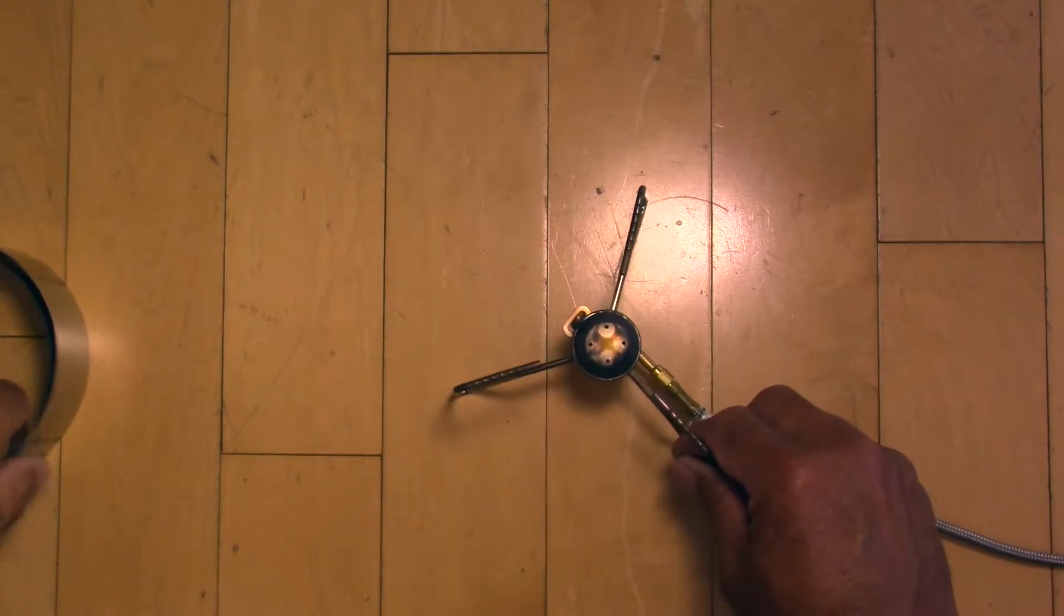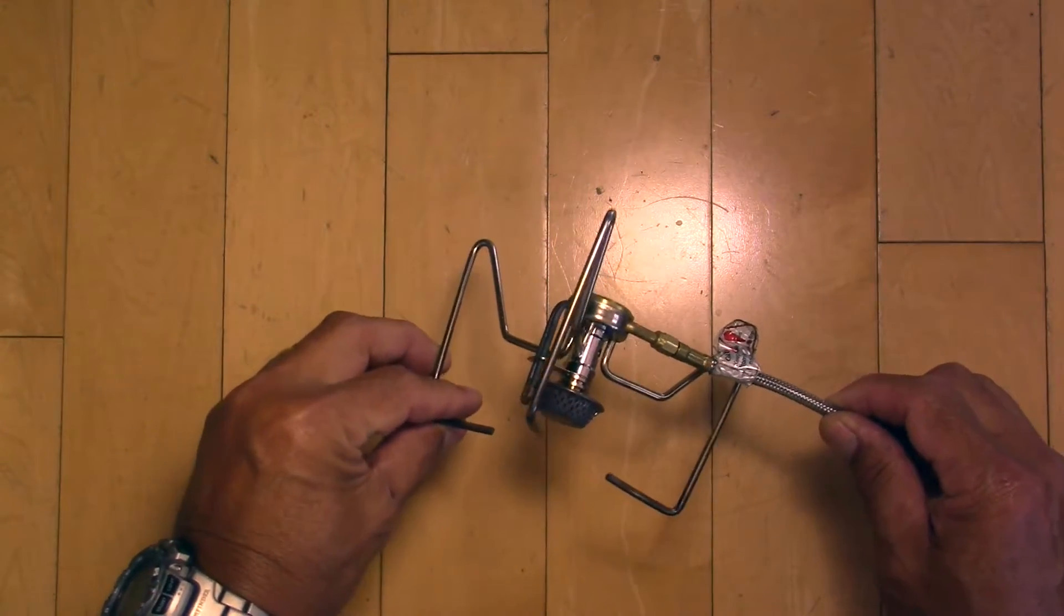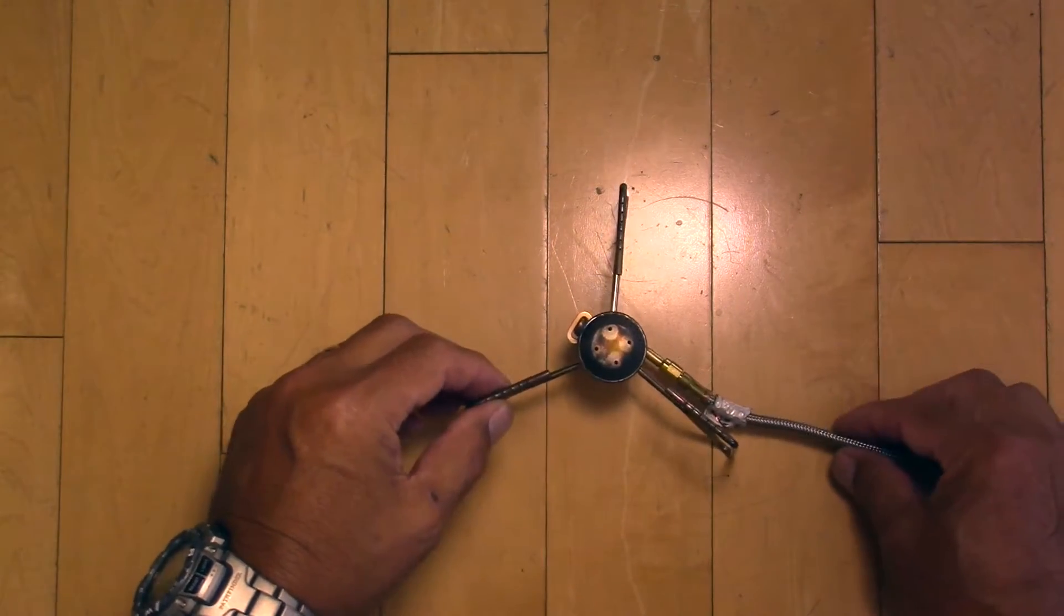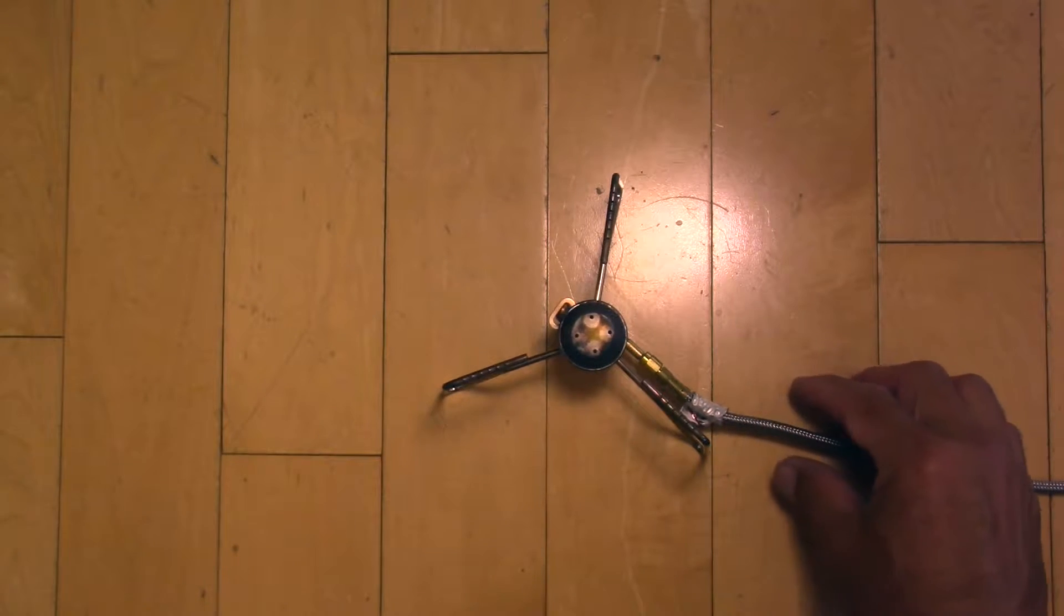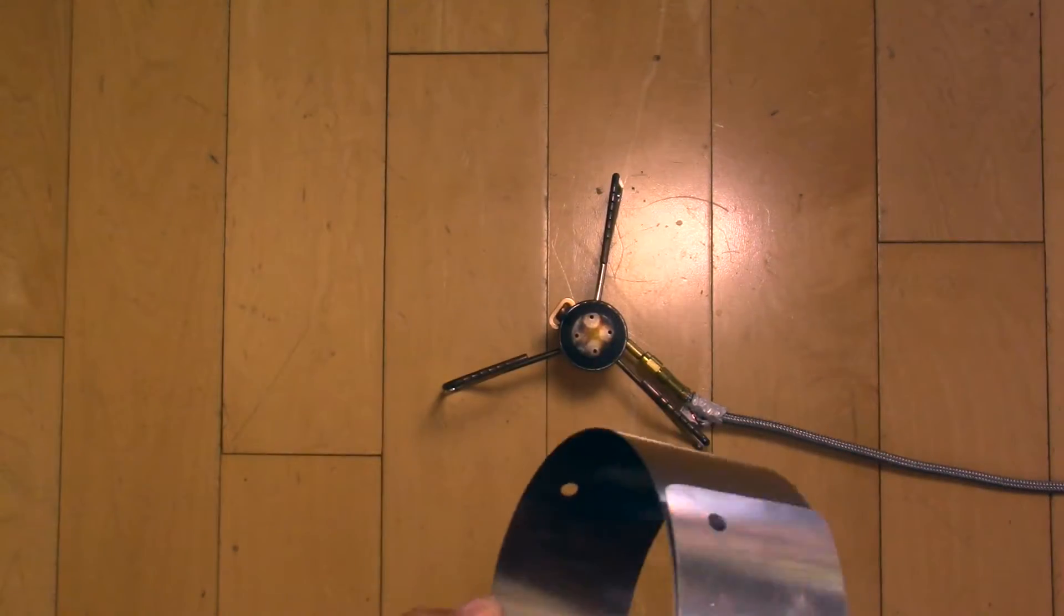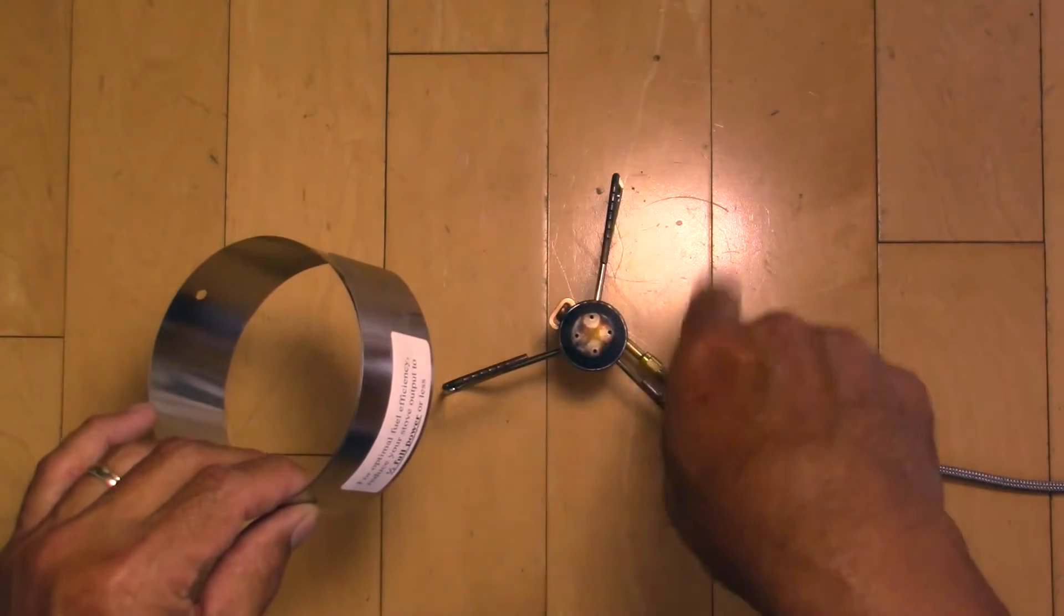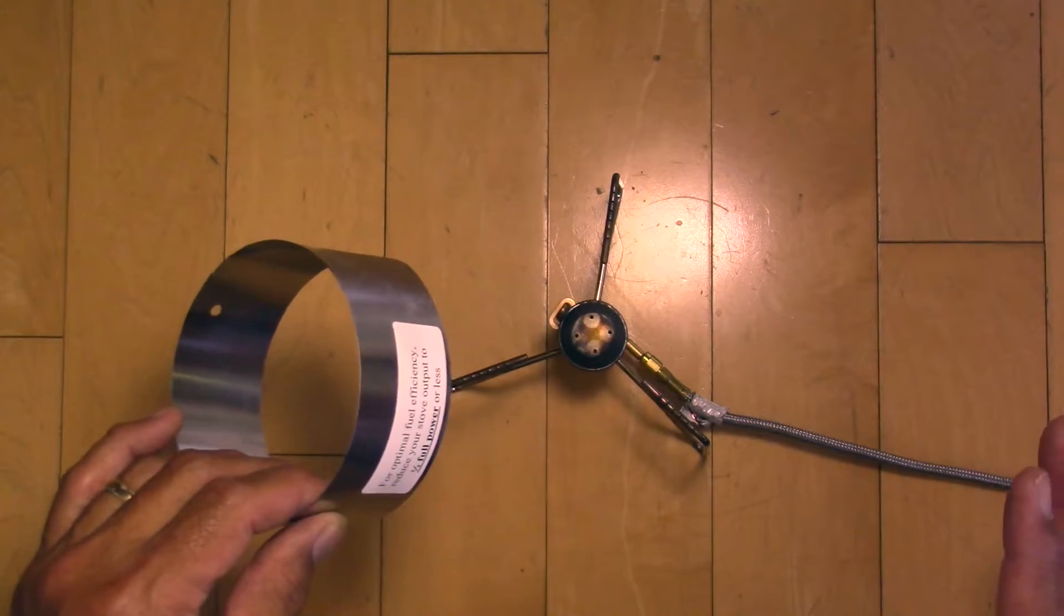My name is John from Flat Cat Gear and what you're looking at is the Kovea Spider. We developed the Ocelot system for the Kovea Spider and it's actually the simplest one to assemble and use because we mount the windscreen on top through the pot support arm, so no burner plates needed. It's actually the easiest one to assemble.